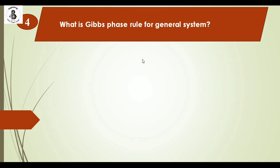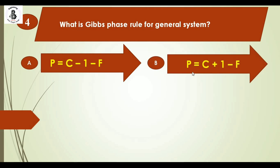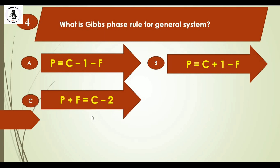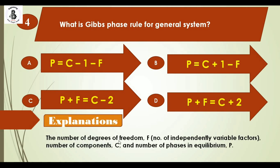Question 4: What is the Gibbs phase rule for a general system? Option A: P = C − 1 − F, Option B: P = C + 1 − F, Option C: P + F = C − 2, Option D: P + F = C + 2. The number of degrees of freedom is F, the number of component systems is C, and the number of phases in equilibrium is P. As per Gibbs, P + F = C + 2. The right answer is option D.